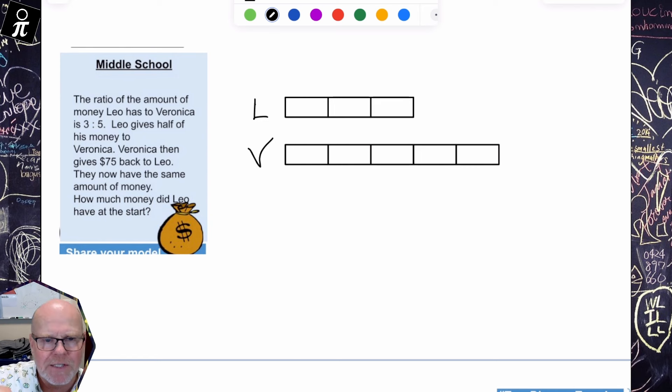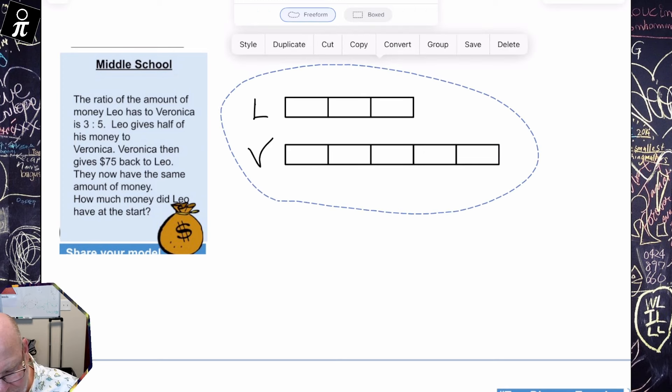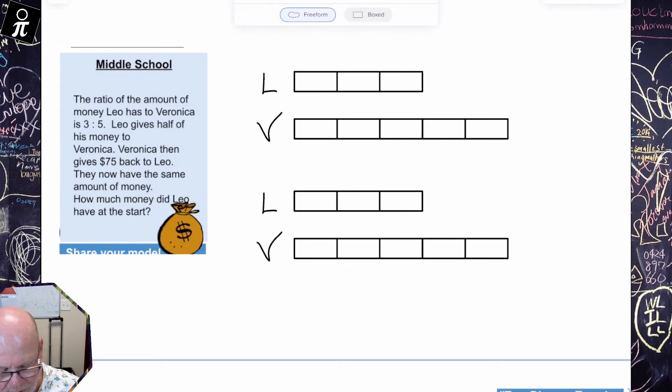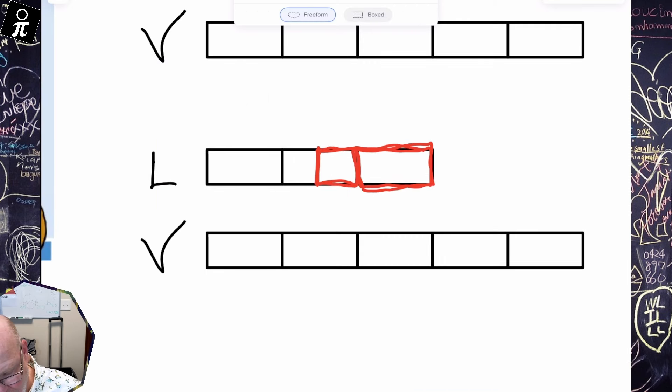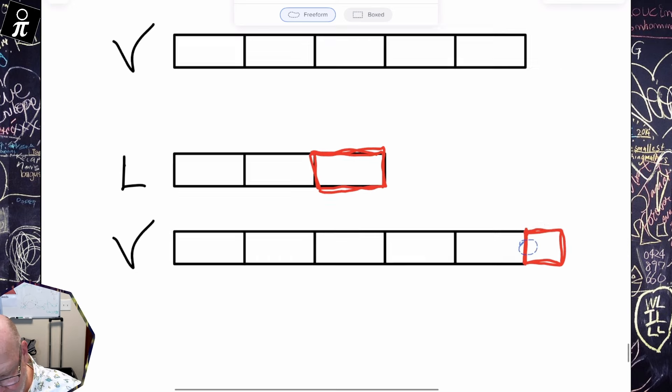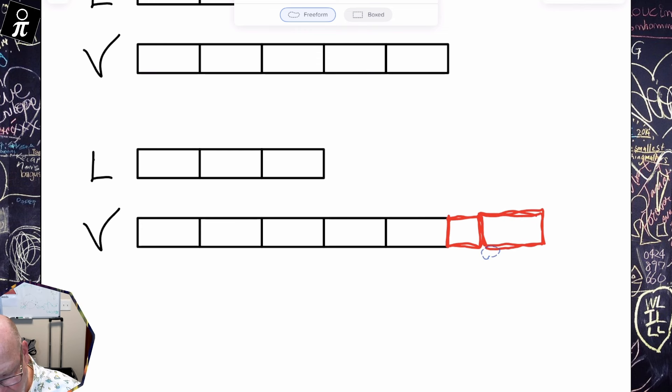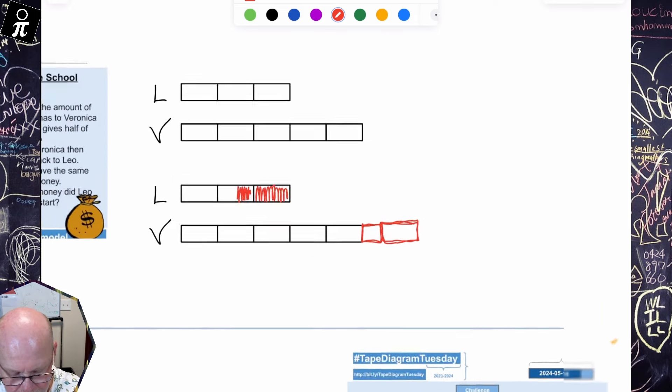So now Leo gives half of his money to Veronica. Veronica then gives $75 back to Leo. They now have the same amount of money. So Leo gives half of his money to Veronica. So I'm just going to keep all this and I'm going to make a copy of it and we're going to do some work down here. So Leo gives half of his money right here. So he's going to give a small little unit and he's going to give this big unit. So he's going to give that to Veronica. So that means all of this disappears.